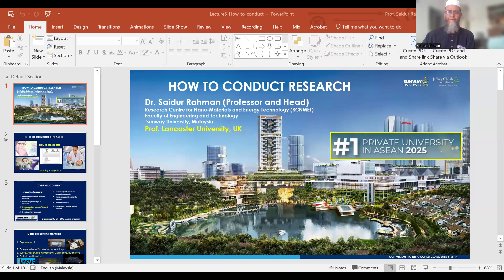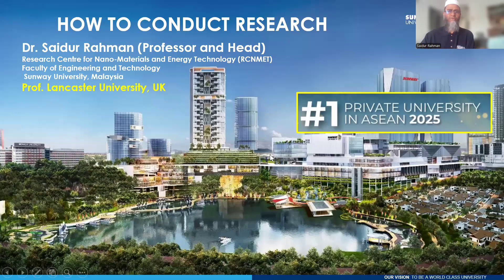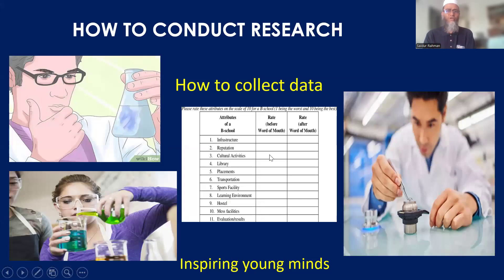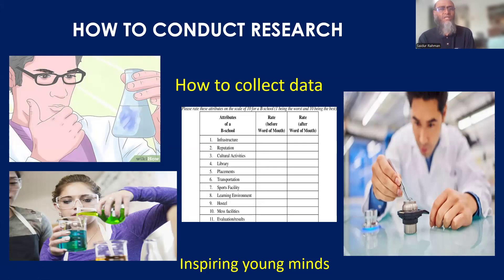This is basically a data collection method — how you can collect your data. This is one of the important aspects of your research. In research, you need to write a paper, write your title, collect your data, and study literature. There are many steps and aspects of research, and one of the important aspects is data collection, which is called research methodology.